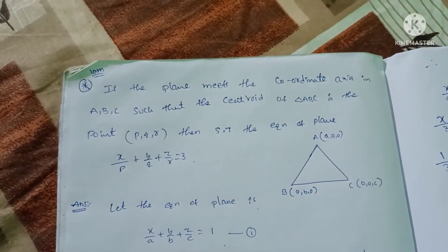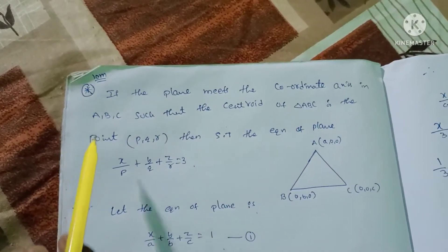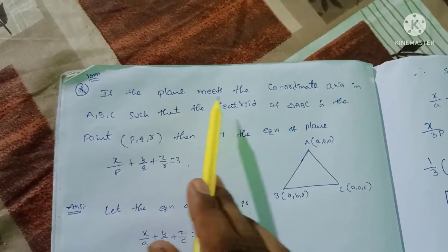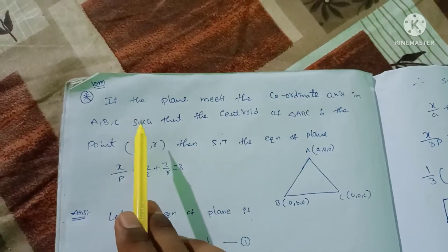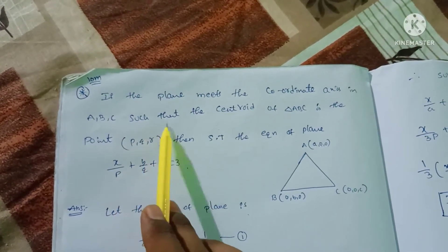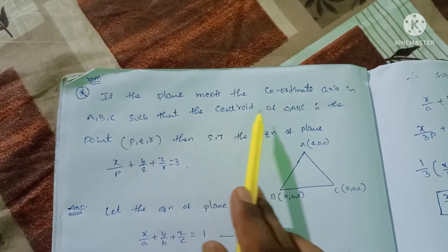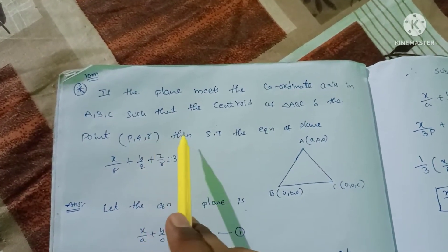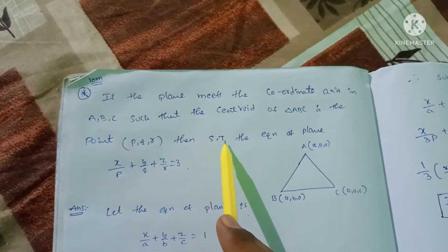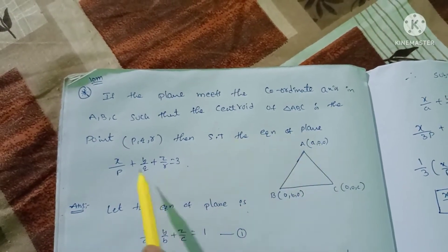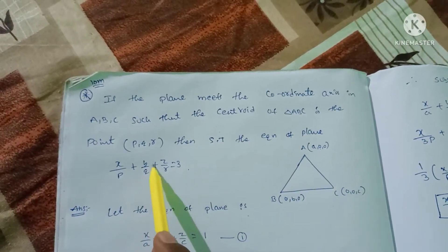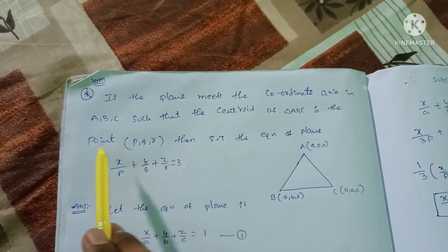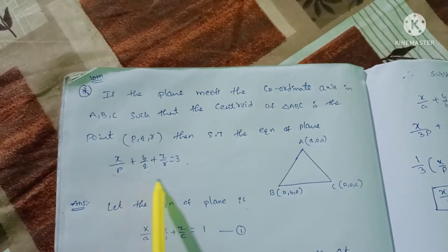This is a chapter on planes. Denmark's first problem is important: if the plane meets the coordinate axis in A, B, C such that the centroid of triangle ABC is the point (p, q, r), then show that the equation of the plane is x/p + y/q + z/r = 3. This is what we have to prove.